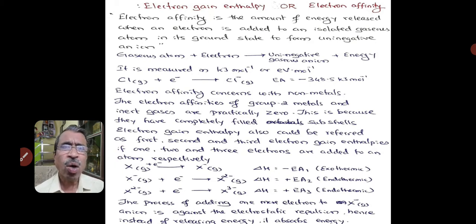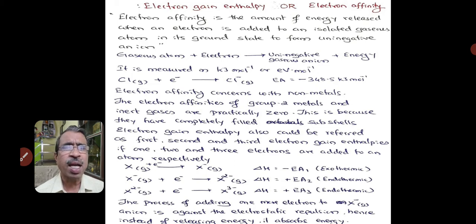Electron affinity concerns with non-metals. The electron affinity of group 2 metals and inert gases are practically zero because they have completely filled subshells.